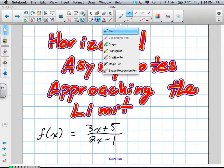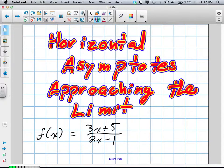Okay, we're going to go over horizontal asymptotes again. This time approaching the limit. Same idea, just a bit different.